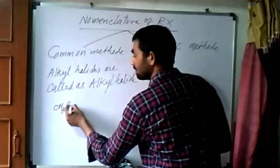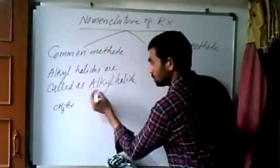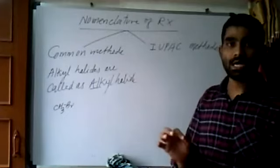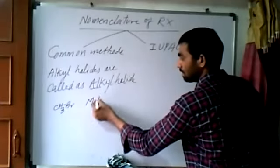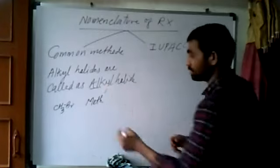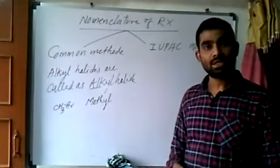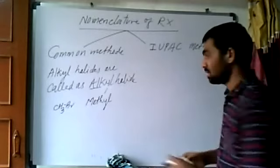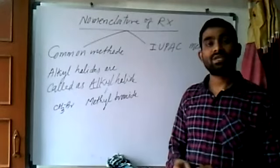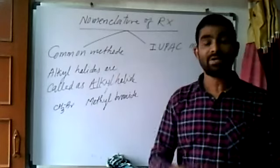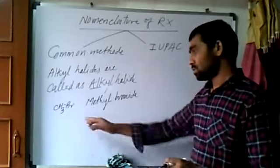Meaning is, if I write CH3Br, alkyl is the number of carbon atoms. How many carbon? One carbon. So I will write meth, and I have to add YL. So this becomes methyl. And there is bromine, so write it as halide means bromide. Bromine becomes bromide. Common method gives very simple idea how to write the name of halogen derivatives of alkyl. So this is methyl bromide.